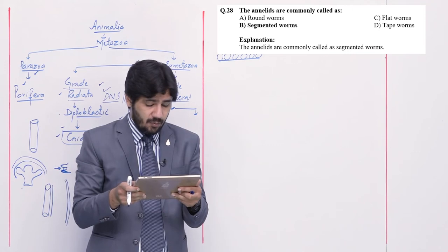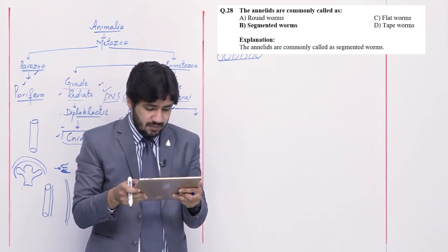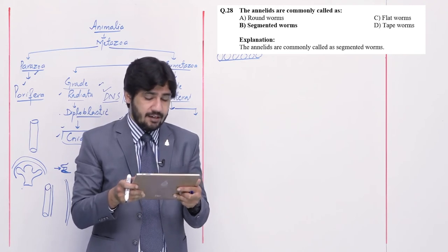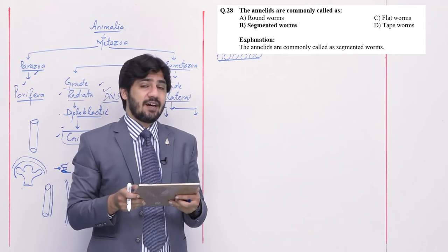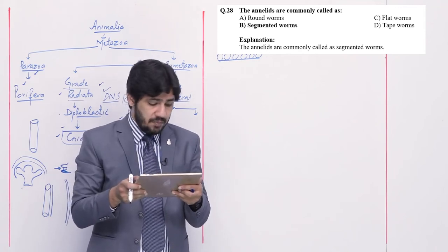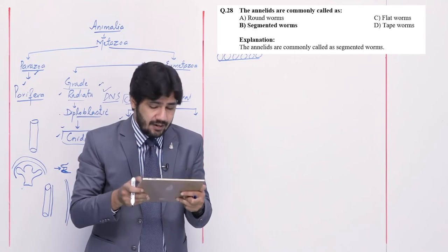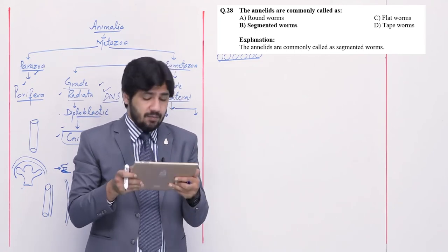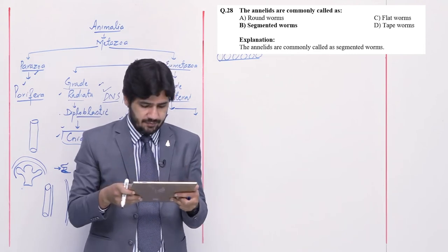Question number 28: annelids are commonly called — alpha roundworms, beta segmented worms, charlie flatworms, and delta tapeworms. Roundworms is the common name for nematodes. Annelids are called segmented worms — right option is beta. Flatworms refers to Platyhelminthes. Tapeworm is a member (not a phylum name).